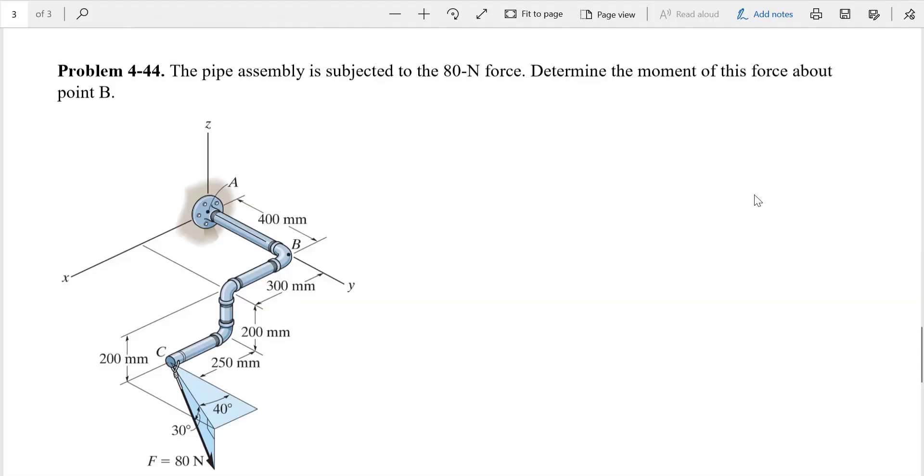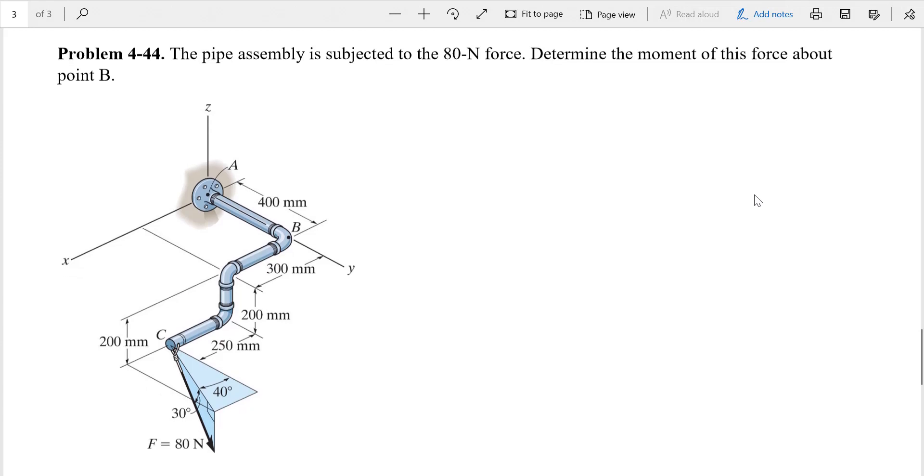Hello everyone, in this video we're going to solve Problem 4-4-4 of Chapter 4. The pipe assembly is subjected to an 80-Newton force. We have the magnitude of the force but not in Cartesian form. We have to find it in Cartesian form and determine the moment of this force about point B.